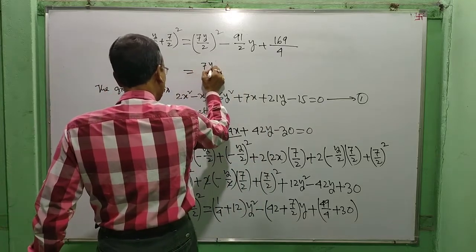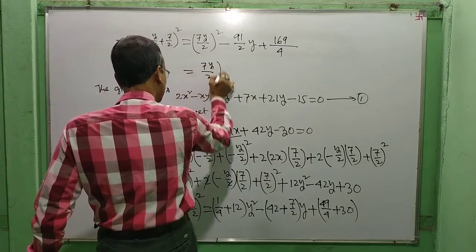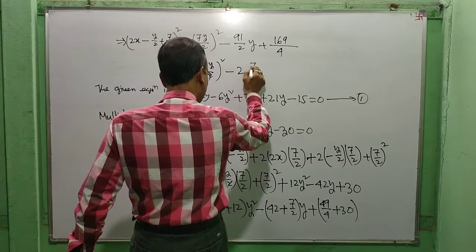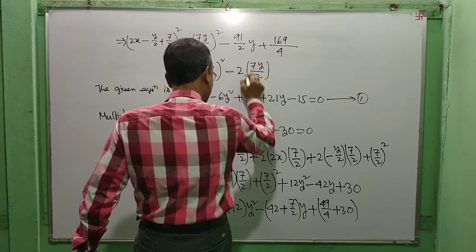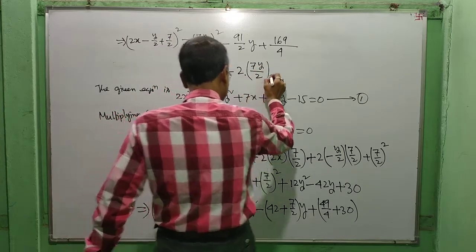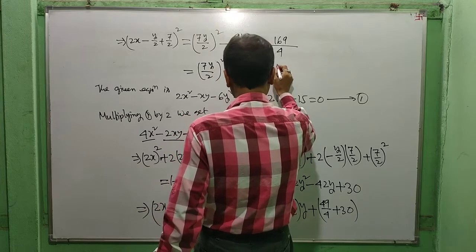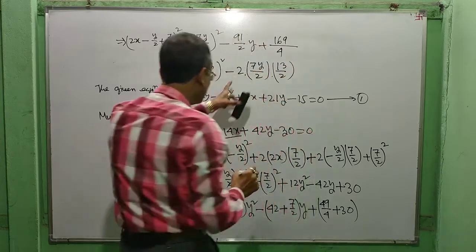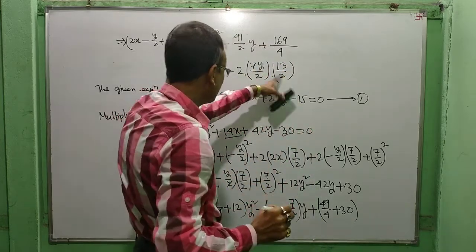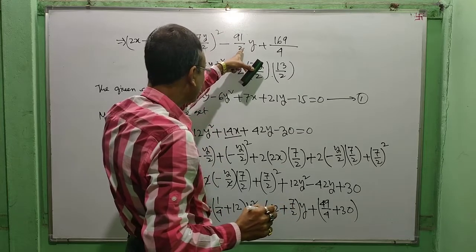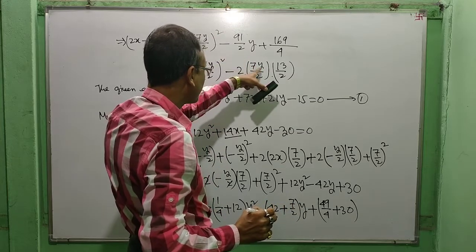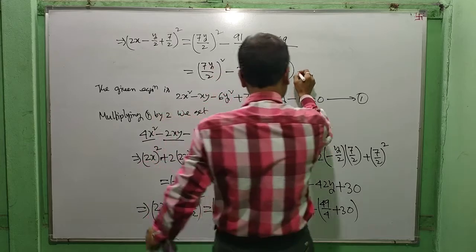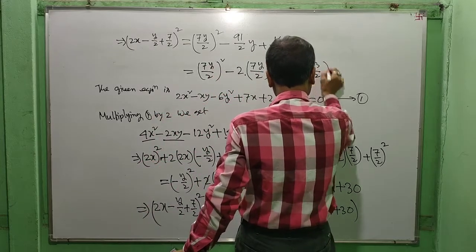This is equal to (7y/2)² minus 2 times of (7y/2) into (13/2). You may write like this — the 2 will be cancelled. 2 will be on the denominator and 13 into 7 gives 91, plus (13/2)² whole square.